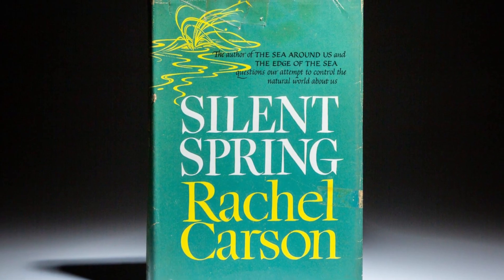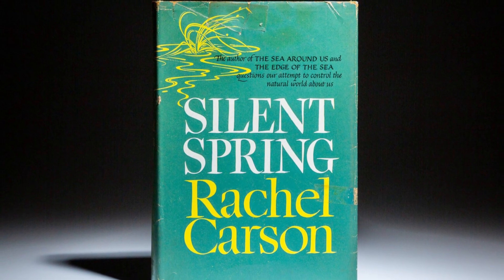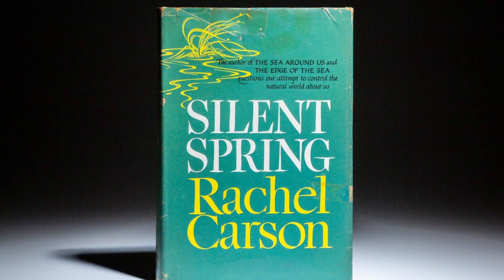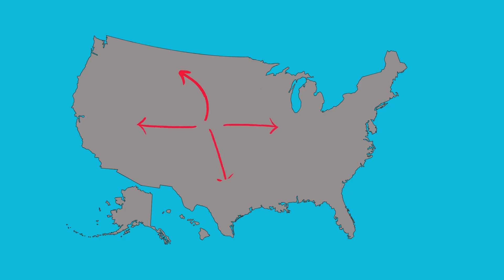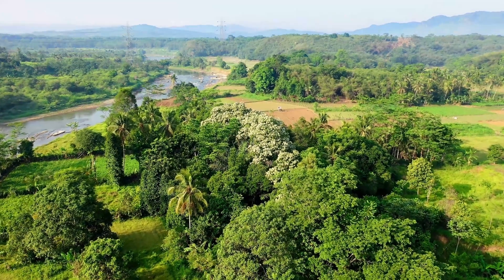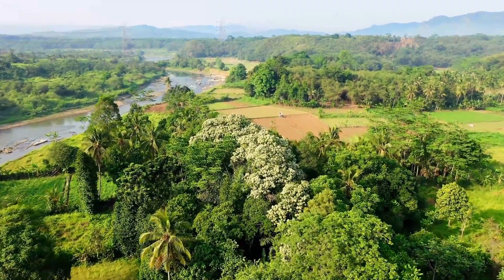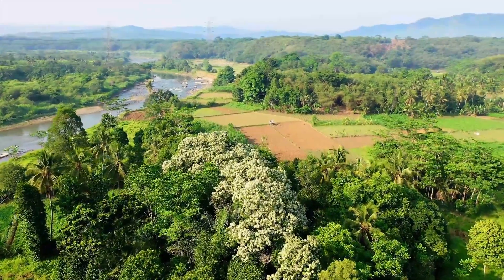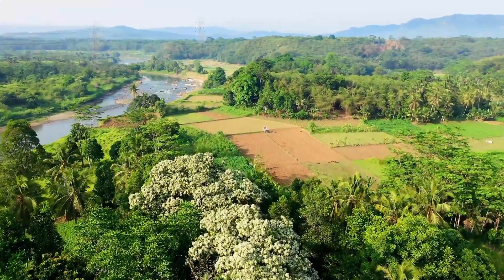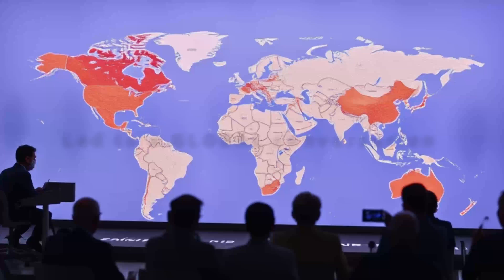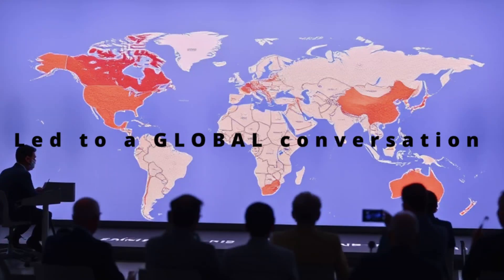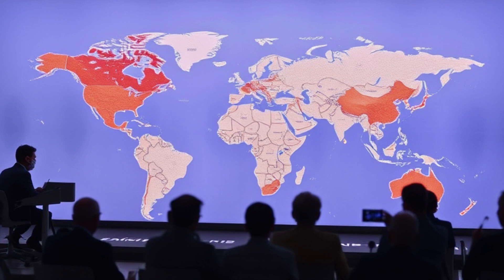In 1962, Rachel Carson's groundbreaking book Silent Spring brought DDT's environmental dangers to the forefront of public consciousness. Carson's research documented the widespread contamination of ecosystems and the devastating impact on wildlife populations caused by the unchecked use of DDT and other pesticides. Her book sparked a national debate about the safety of synthetic chemicals and their unintended effects on the environment, leading to a global conversation about humanity's role in the natural world and the long-term consequences of chemical interventions.